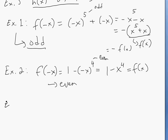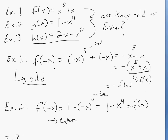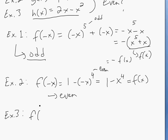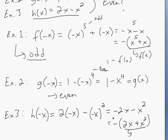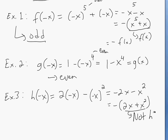For example 3, this is a tricky one. If you put h of negative x, you get 2 times negative x minus negative x squared, which equals negative 2x minus x squared. Taking the negative out gives negative of 2x plus x squared. As you can see, this is not h of x, and it's not negative h of x either, so this function is neither even nor odd.